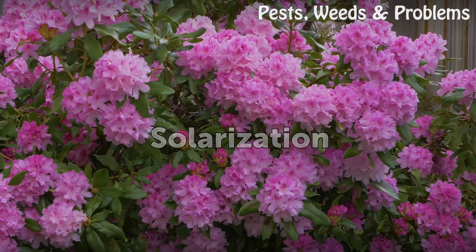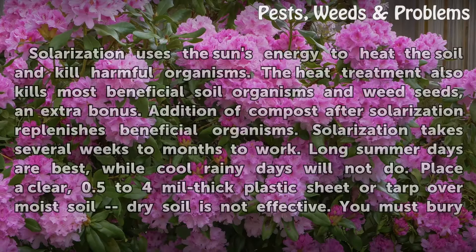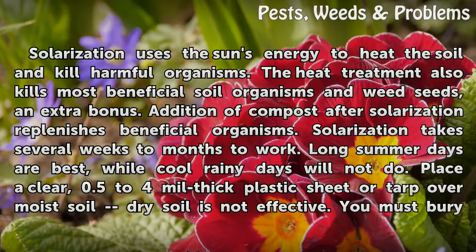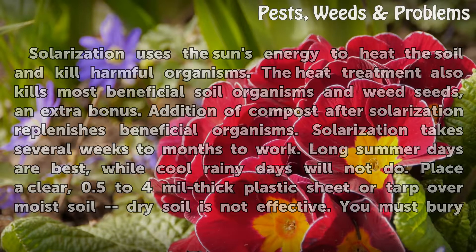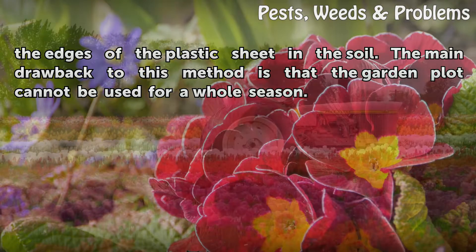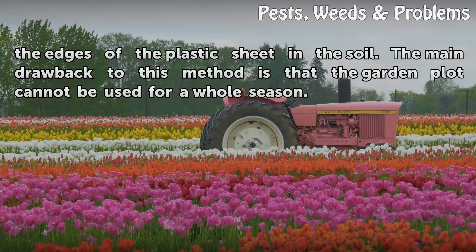Solarization uses the sun's energy to heat the soil and kill harmful organisms. The heat treatment also kills most beneficial soil organisms and weed seeds. Adding compost after solarization replenishes beneficial organisms. Solarization takes several weeks to months to work — long summer days are best, while cool rainy days will not do. Place a clear 0.5 to 4 mil thick plastic sheet or tarp over moist soil, as dry soil is not effective. The edges of the plastic sheet must be buried in the soil. The main drawback is that the garden plot cannot be used for a whole season.